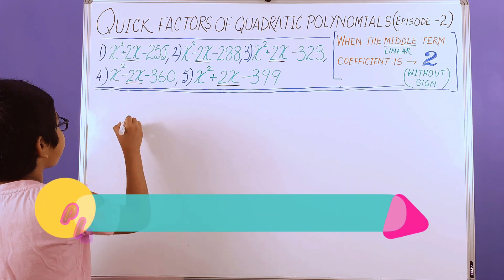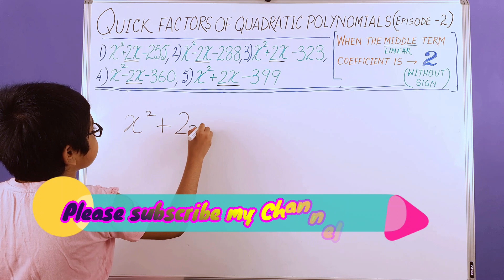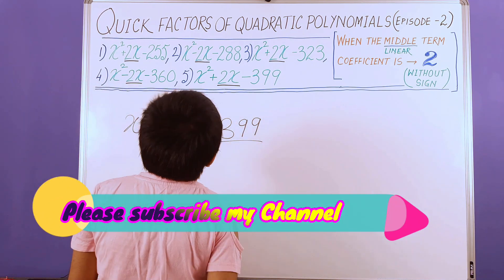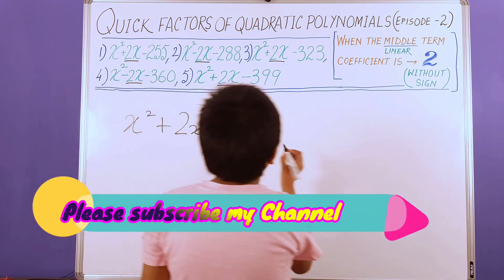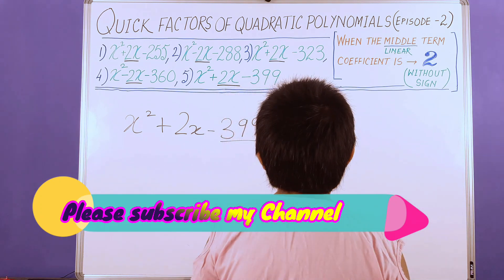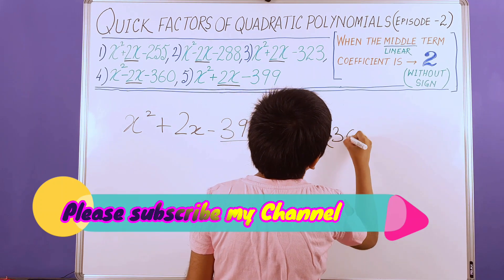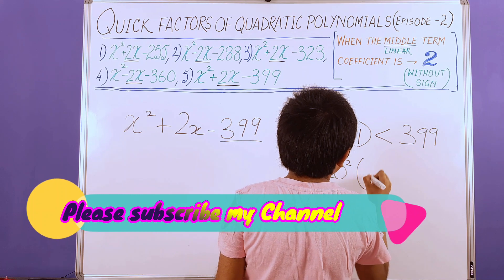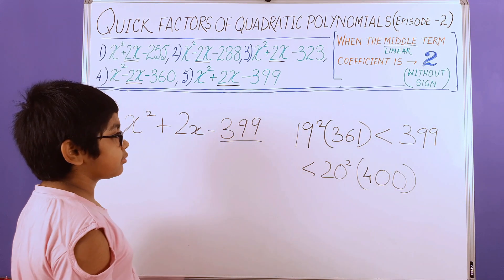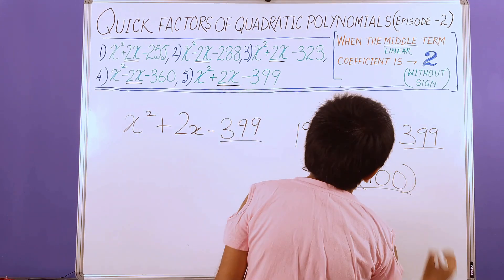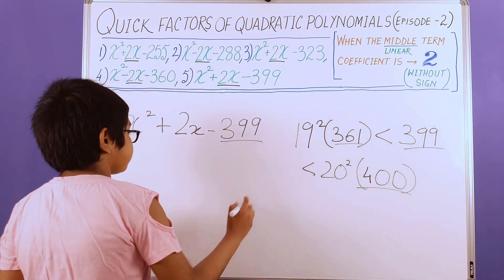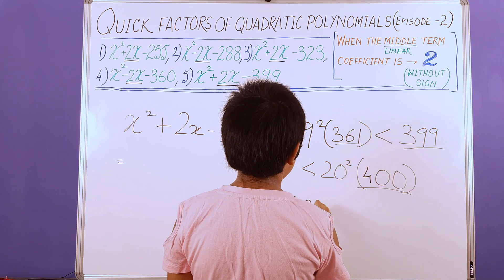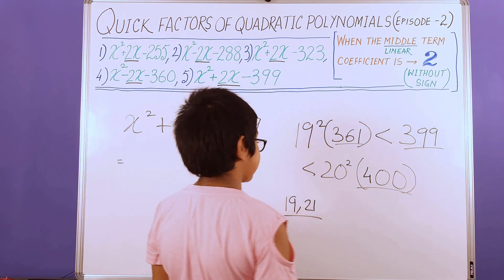We move on to our last and fifth polynomial: x squared plus 2x minus 399. Again, we need to take care of the constant term and the 2x term. The 399 has to be located between two consecutive perfect square numbers: 19 squared is 361, less than 399, less than 20 squared, which is 400. We add 2 to the smaller number to get the pair 19 and 21, and we subtract 2 from 20 to get the pair 18 and 20.